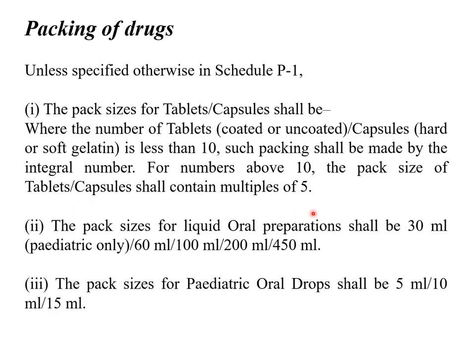Where the number of tablets or capsules is 9 or less, you can have any number in a strip — it could be 2, 4, 6, 8, or 9. But if it is 10 and more, then the pack sizes will be 10 tablets, 15 tablets, 20, 25, 30 and so on.